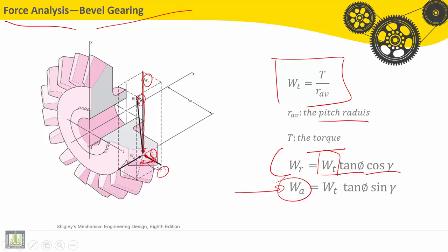Now, the axial force, Wa, which is parallel to the axis of rotation, is equal to the tangential force Wt times tangent phi, this angle, times sine gamma.